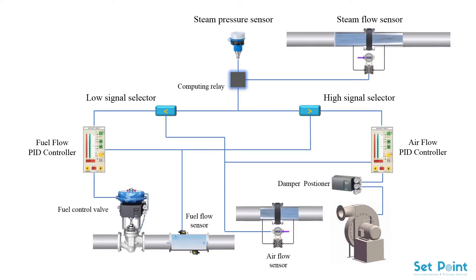Here we have the schematic diagram of the automatic combustion control system used in industrial boilers. This system has four measuring elements: a steam flow sensor to measure the flow rate of steam loaded from the boiler, a steam pressure sensor to measure the pressure of steam in the boiler, a fuel flow sensor to measure fuel flow to the boiler burners, and an air flow sensor to measure the air flow to the boiler.